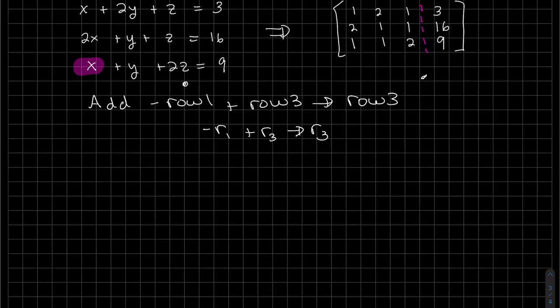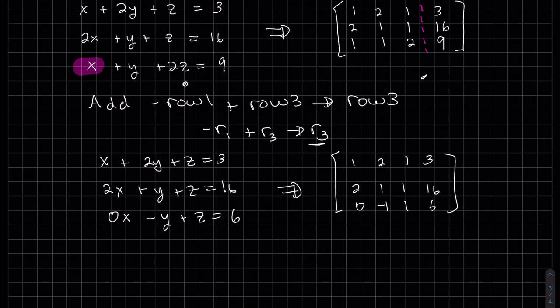We'll do that to both sides. Here we're not changing the first equation or the second. The only one changing is three. We have to do it up here. Minus x plus x is zero x. Minus two y plus y is minus y. Minus z plus two z is plus z. Minus three plus nine is six. And again we could have done it here too.